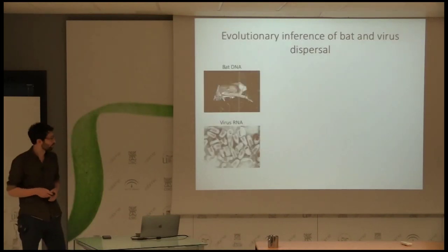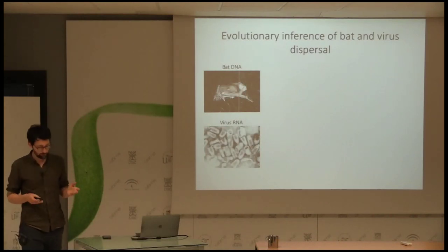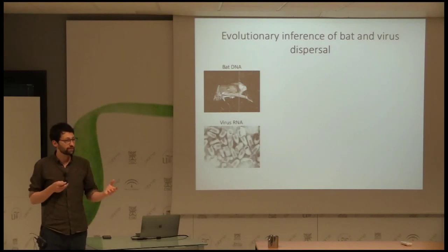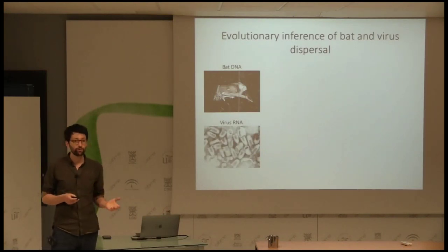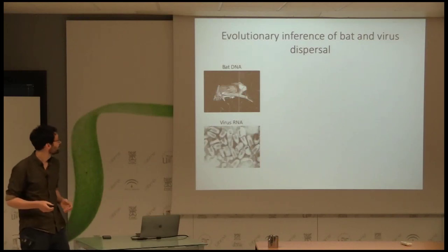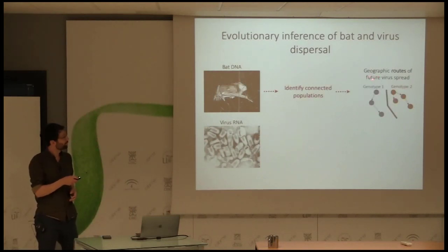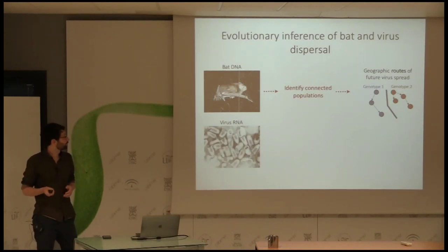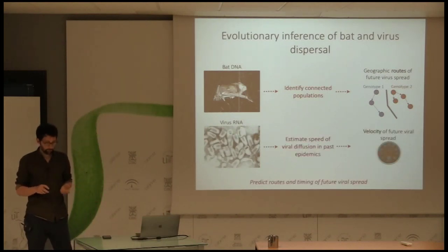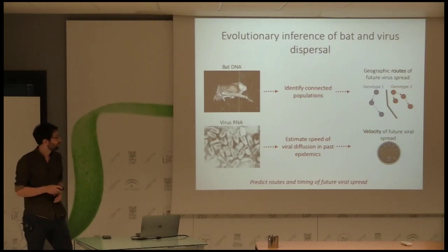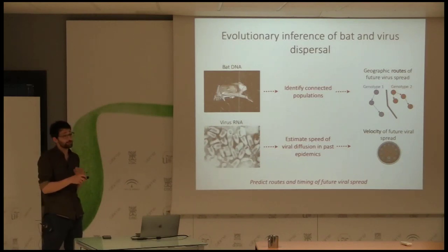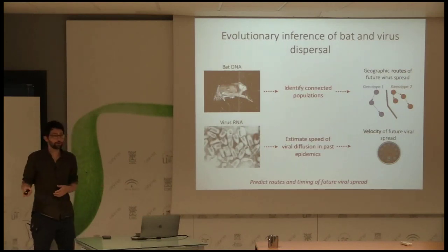Instead we turned to an evolutionary approach: both bat DNA and viral RNA contain information about space and the connectivity of populations. Bat DNA would tell us something about how well-connected populations are, giving us the future geographic routes a virus might spread. From the virus side, we can use new analytical methods that estimate the speed of viral diffusion from past viral sequence data. If we combine routes and speed, that tells us something about how a future outbreak might invade across the landscape.